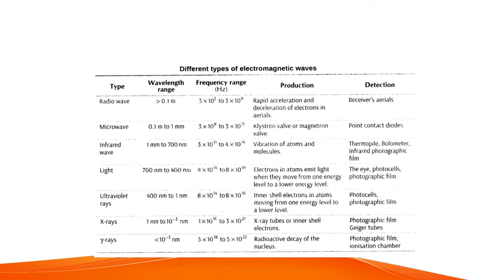Visible light has wavelengths from 700 nanometers to 400 nanometers, and frequency from 4 × 10¹⁴ Hz to 8 × 10¹⁴ Hz. It is produced by electrons in atoms emitting light when they move from one energy level to a lower energy level — as studied in hydrogen spectrum series: Lyman series in the ultraviolet region, Balmer series in the visible region, and Paschen, Brackett, and Pfund series in the infrared region.